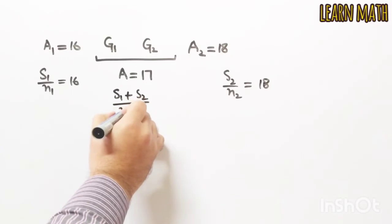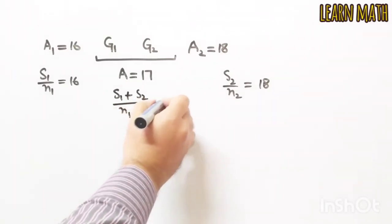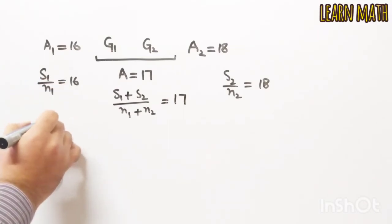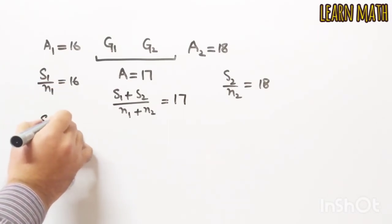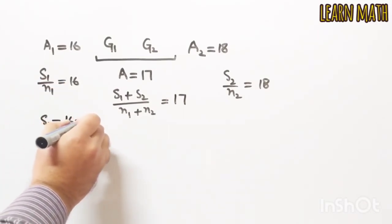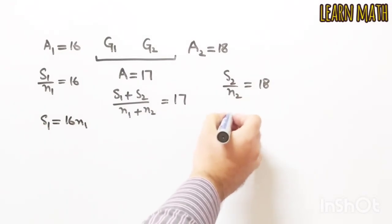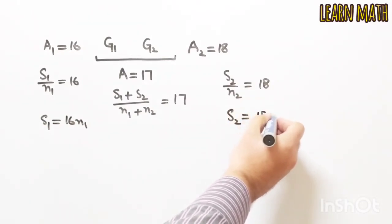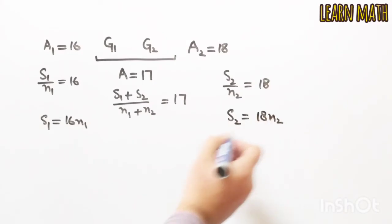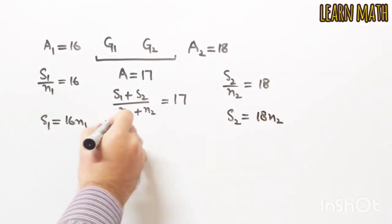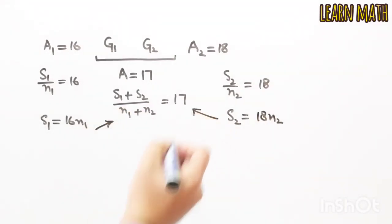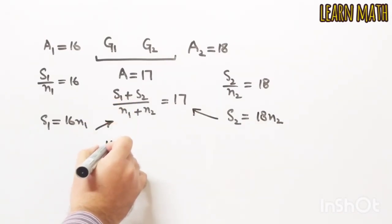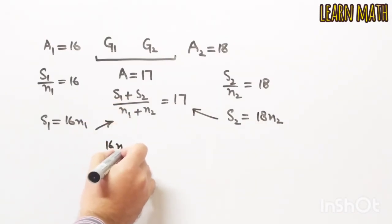From this we can write s1 = 16·n1, and from the second equation we can write s2 = 18·n2. We will put these values of s1 and s2 into the combined average equation, giving us: 16·n1 + 18·n2 = 17·(n1 + n2).